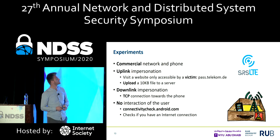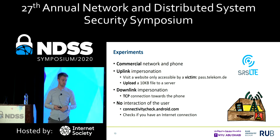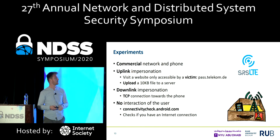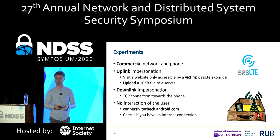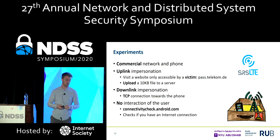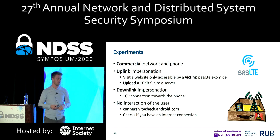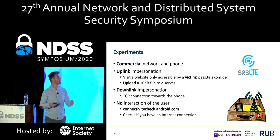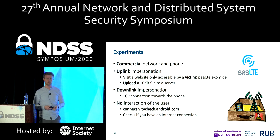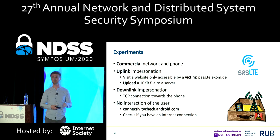We performed experiments in a commercial network with a commercial phone, not modified at all. We built the man-in-the-middle attacker based on srsLTE, which is an open source software stack, and performed three kinds of attacks. The first two are uplink impersonation attacks: we visited a website only accessible by the victim — in our case our local provider, pass.telekom.de — and we uploaded a 10-kilobyte file to a server using the IP identity of the victim. We also performed a downlink impersonation attack where we built a simple TCP connection sending commands to the phone. Importantly, this attack does not require any user interaction because we intercept starting from the first connectivity check every phone performs — on Android, this is connectivitycheck.android.com.